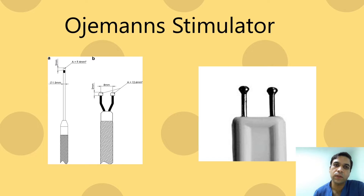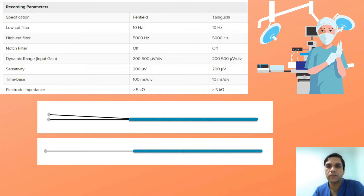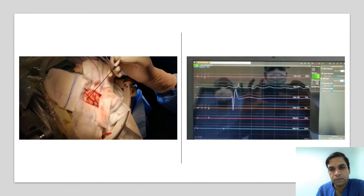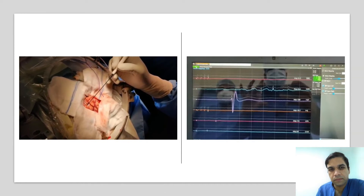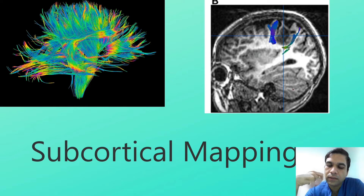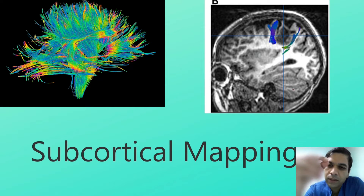The stimulator we use is called Ojemann's stimulator. These are the electrophysiological parameters — electrophysiologists can review the details. After stimulation on the surface of the brain, we get a signal called CMAP, or compound motor action potential response, on the screen. Where we get the response is the area producing the signal — that is the motor cortex. For example, if we get a response in the hand area, that part of the brain is concerned with hand function, so we try to stay away from that part of the cortex.